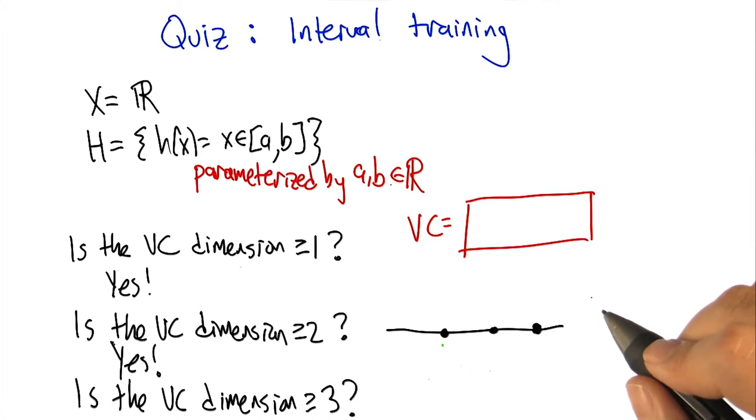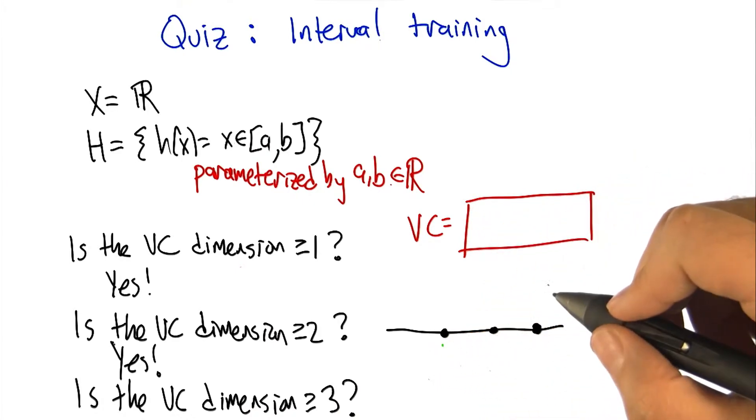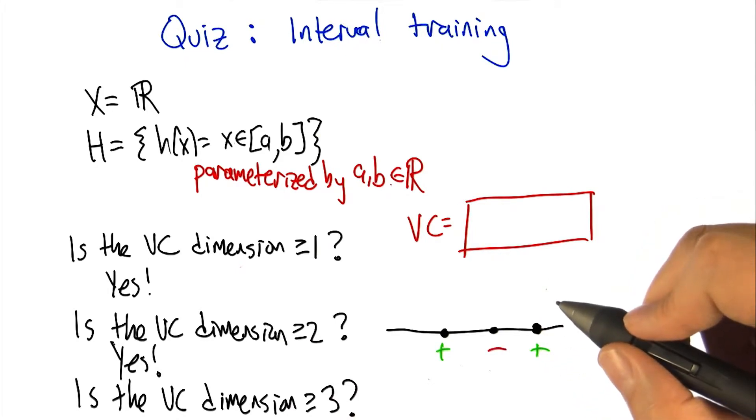So this is a lot like the last example we did with the theta. Except now we have two parameters. And the problem we have with the theta is that as we move the theta over from left to right, we lost the ability to have a positive followed by a negative. So I think there's a similar thing here. So if you label those three points this way, plus, minus, and plus, I don't think you can do that.